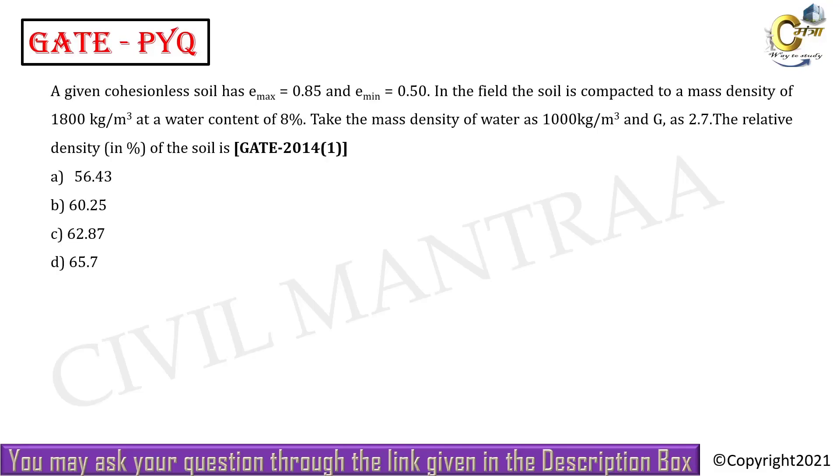Hello students, welcome to Civil Mantra. The question involves a cohesionless soil with emax = 0.85 and emin = 0.50. In the field, the soil is compacted to a mass dry density of 1800 kg per meter cube. Water content is given. Take the mass density of water as 1000 kg per meter cube. Given G = 2.7.